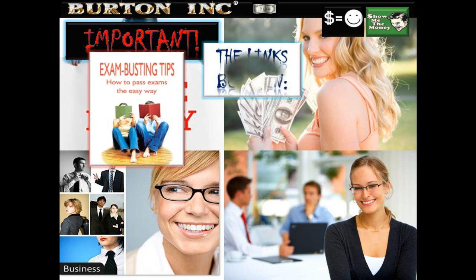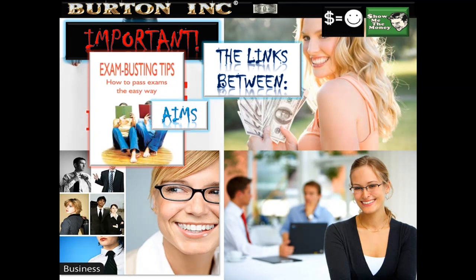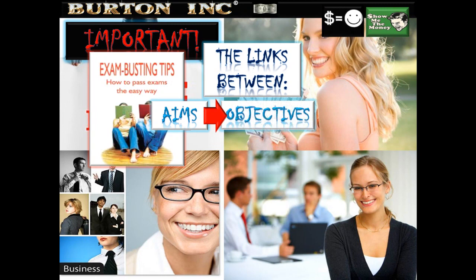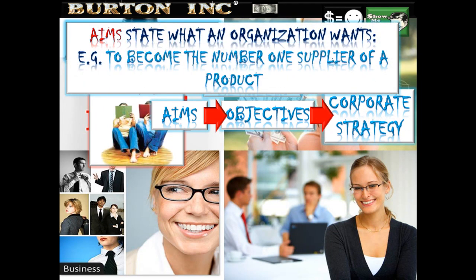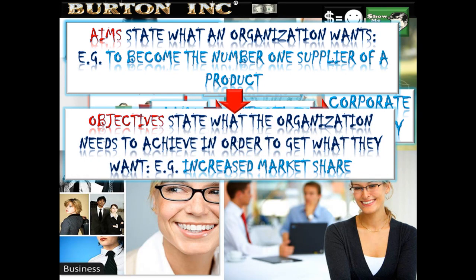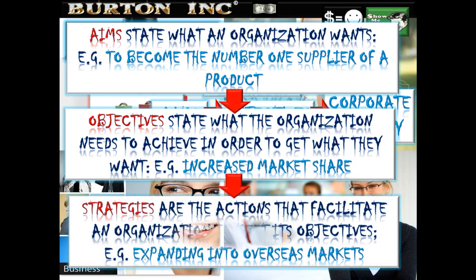These are all linked. Objectives flow from aims; strategy flows from corporate objectives. For example, an aim states what an organization wants — to become the number one supplier of a product. The objective behind that aim states what the organization needs to achieve to get there — to increase market share. Strategies are the actions that facilitate the organization to meet its objectives — how can we increase market share? We can expand or tap into overseas markets.